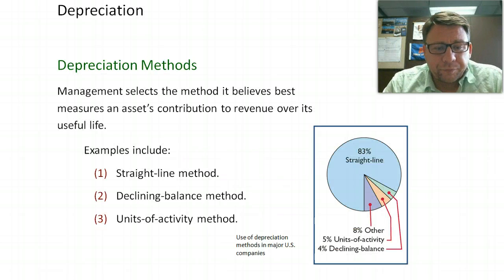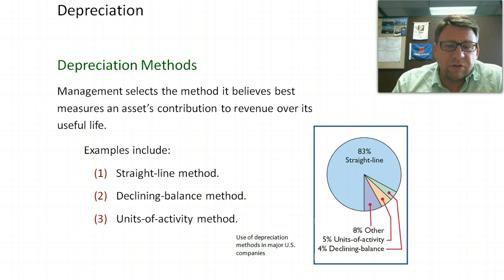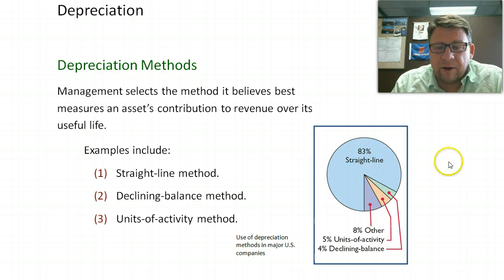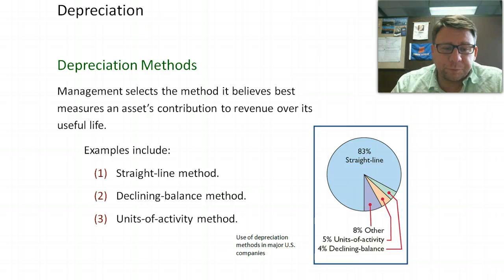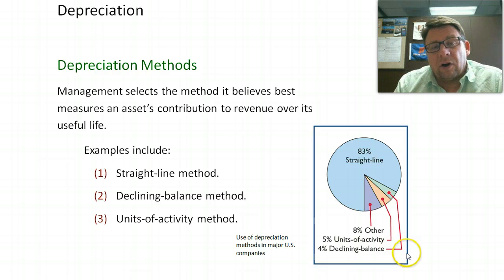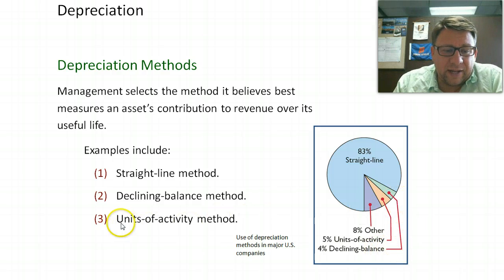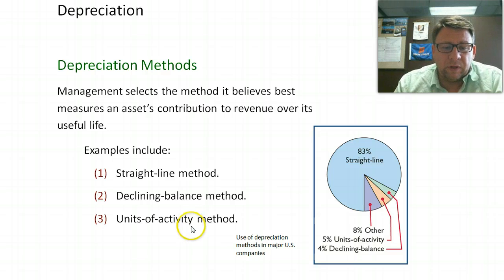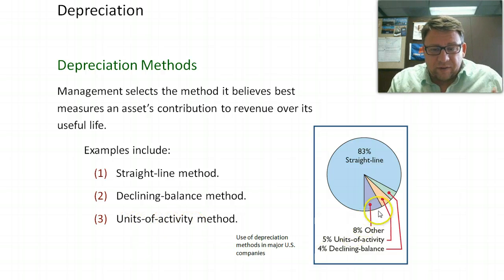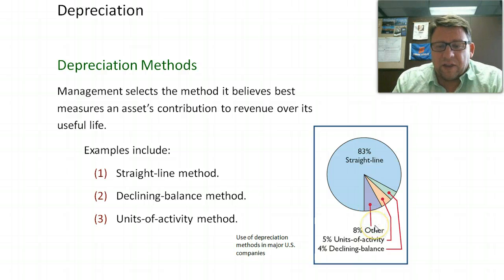There are three primary depreciation methods we're going to learn. The most common, as shown in this graph, is the straight-line method — 83% of companies choose straight line. Some use a declining balance method; we're going to learn double declining balance, which about 4% of organizations use. About 5% use the units of activity method, sometimes called the units of production method. All other methods together represent about 8%.